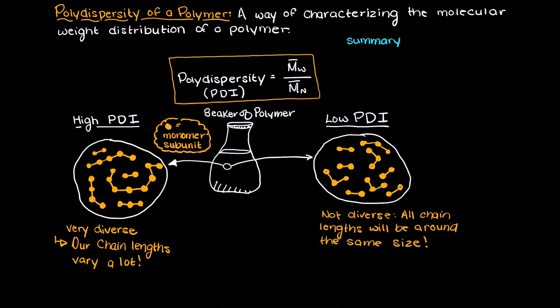So in summary, with a high polydispersity your sample is very dispersed, meaning that it is very spread out.